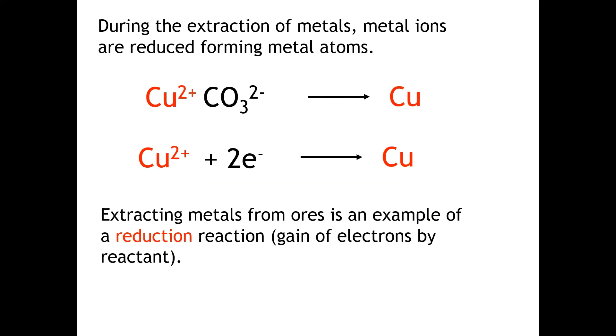When metals are extracted from ores, metal ions are reduced, forming metal atoms. Copper ions, which are present in the ore, gain electrons to form copper atoms. Extracting metals from ores is an example of a reduction reaction, i.e. we have a gain of electrons by the reactant, which is typically a metal ion, to form metal atoms.